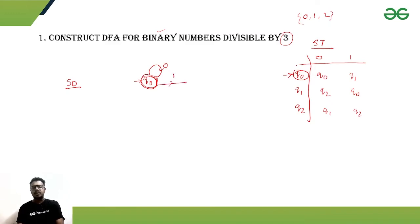From q1, if we are getting zero, then we will go to q2. But if we are getting one, then we will go back to q0. And from q2, if we are getting one, then we will be staying in q2. If we are getting zero, then we will go back to q1.